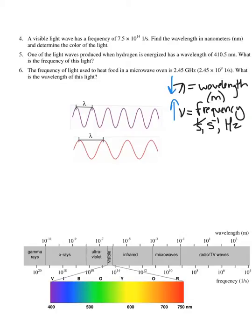Wavelength and frequency are also going to be related to the speed of light, in the sense that if I multiply wavelength and frequency, they equal a constant, which is the speed of light. We give the symbol c to the speed of light, and we can look up its value in our reference sheet. The value is 3 times 10 to the 8th meters per second. This equation also shows the inverse relationship: if wavelength goes up, frequency goes down, and vice versa.